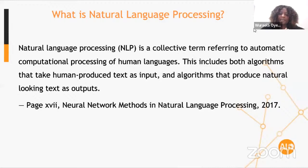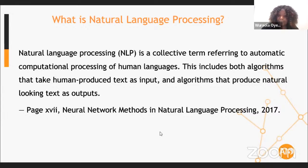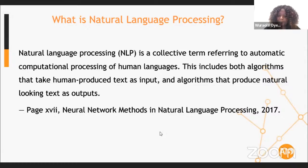Natural Language Processing. I found this definition in a paper. Natural Language Processing is a collective term referring to automatic computation of human languages. Every time you hear Natural Language Processing, we are dealing with human languages. It includes algorithms that can take human-produced text as inputs and algorithms that produce natural-looking text as output. This is still about text. Every time you hear Natural Language Processing, we're talking about either speech or text. Our focus today is on text — I am a text person.